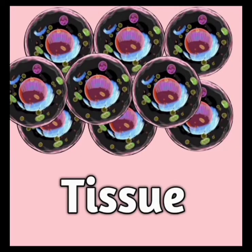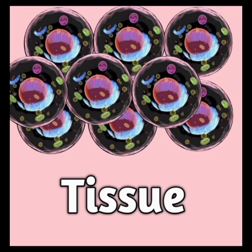A group of cells which are similar in structure and work together to perform a particular function is called a tissue. A tissue is an ensemble of similar cells and their extracellular matrix from the same origin that together carry out a specific function. Organs are then formed by functional grouping together of multiple tissues.